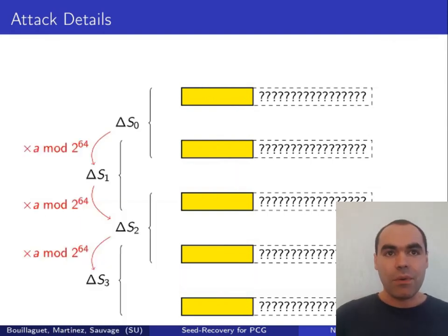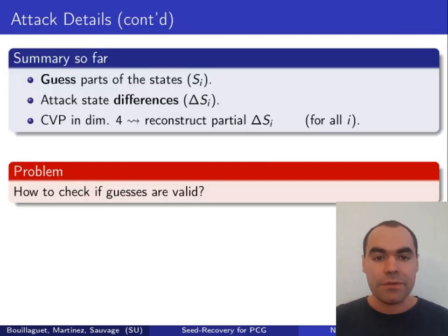To get our geometric sequence, we'll compute the differences between these partial states. By guessing parts of successive states, we can reconstruct parts of the differences between these states. And because the differences form a geometric sequence, we can reconstruct the missing bits as before, by solving an instance of the closest vector problem, but this time in dimension 4.